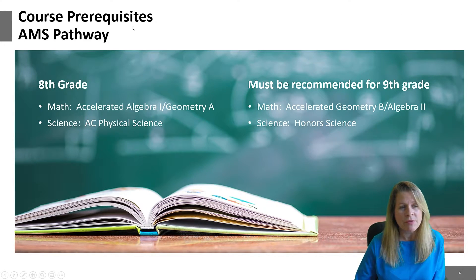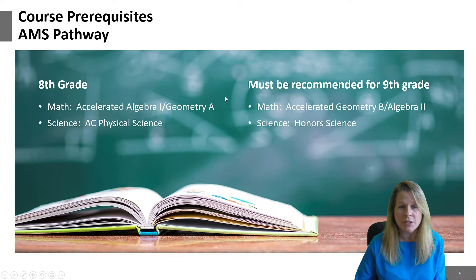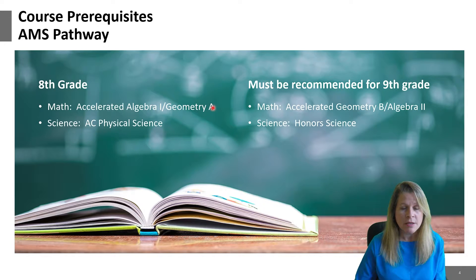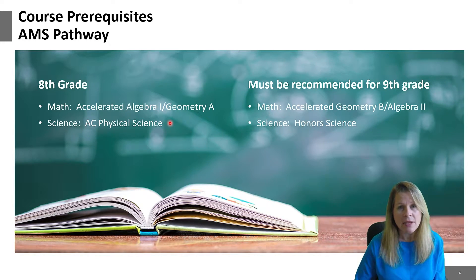Let's look at where you should be in the eighth grade if you're interested in choosing the AMS pathway. As an eighth grader you should already be enrolled in the accelerated algebra geometry A class, because as a ninth grader you'll be taking the continuation of that sequence, which is the geometry and algebra 2 course. Also as an eighth grader you should be enrolled in the advanced content physical science course, and then your eighth grade teacher should recommend you to go into honors science as a ninth grader.